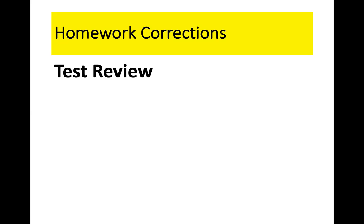Starting in chapter three there are no more fill-in-the-blank proofs — they'll all be open-ended like the honors kids get: here's the given, here's the statement, you do the whole thing. In this class, if you can do the skills — like finding a vertical angle — you'll get a C. You get a B or A if you can do proofs. Geometry is tough because it always involves logic, not just following four steps.